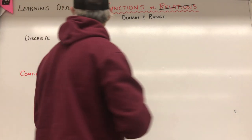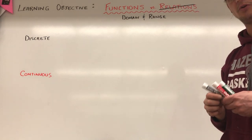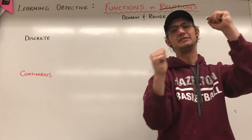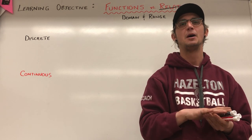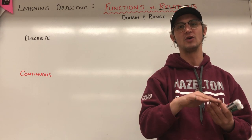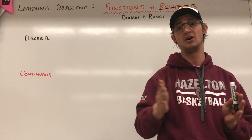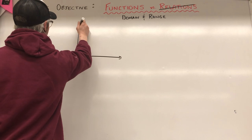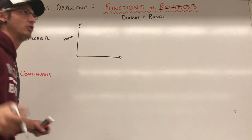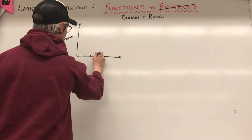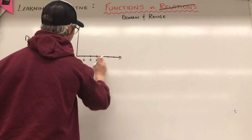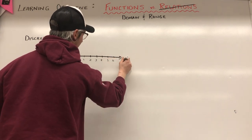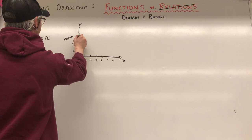Discrete data points are basically graphs where you have specific data — you can't actually exist between the data points. For example, say you're selling boxes of cookies and you want to graph how much money you're making as a function of how many boxes you sell. My y-axis is profits — say I make two dollars profit per box — and the x-axis is the number of boxes sold: one, two, three, four, five, six. And profits go two, four, six, eight dollars.